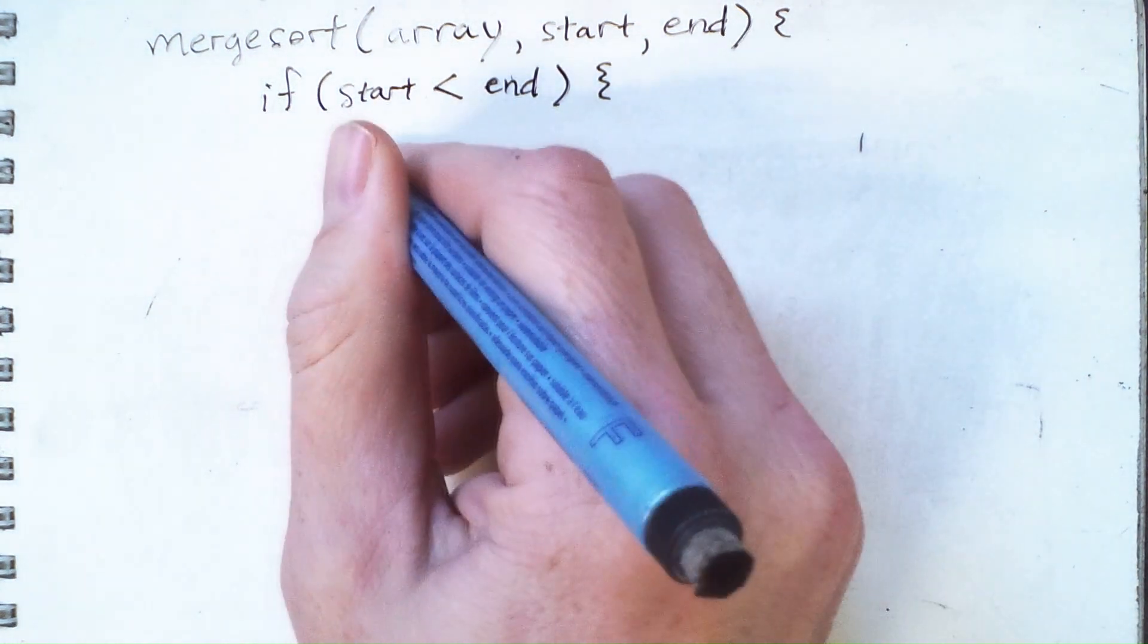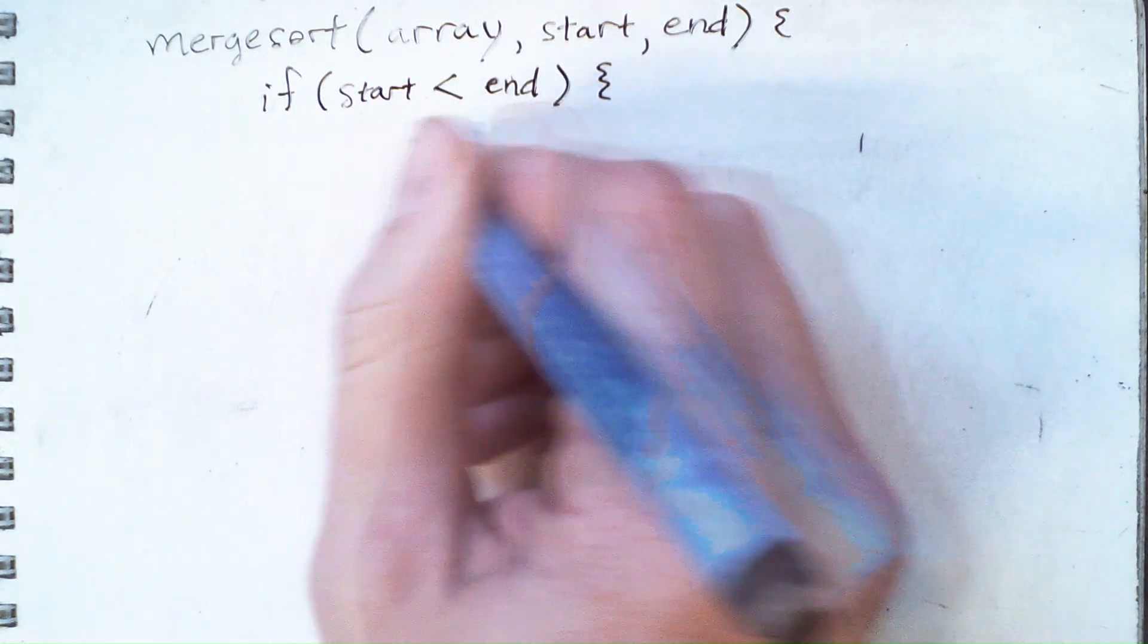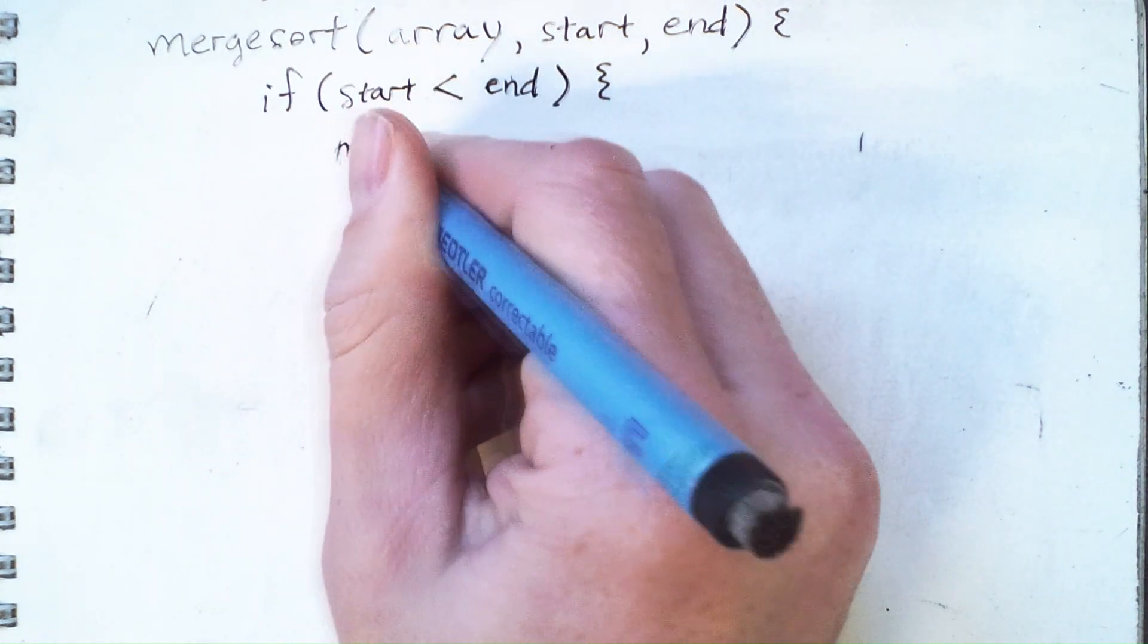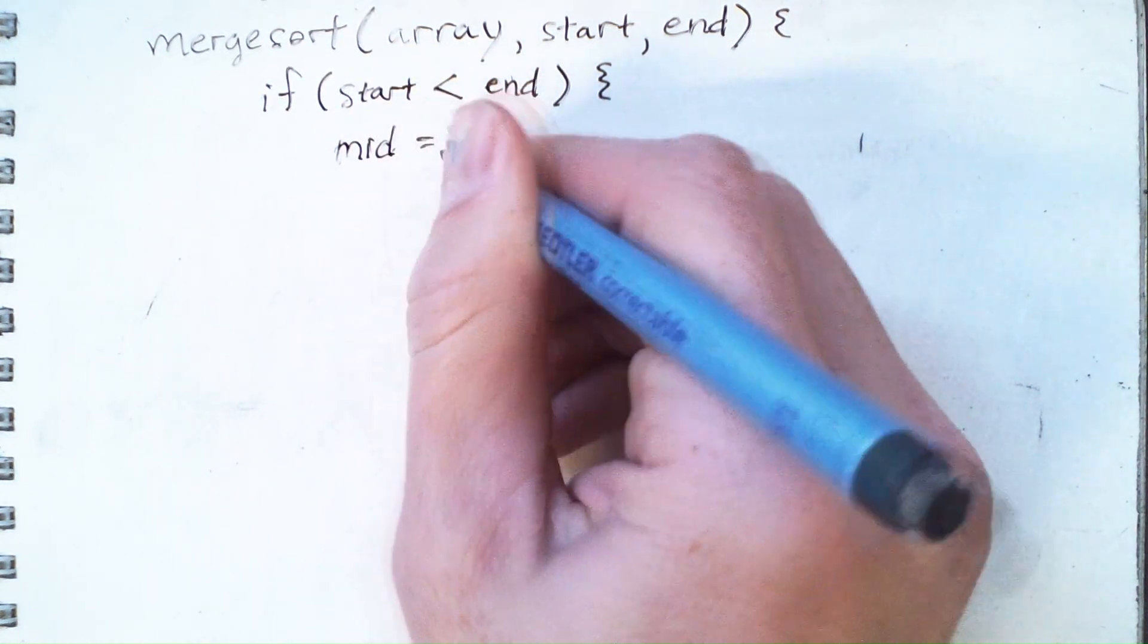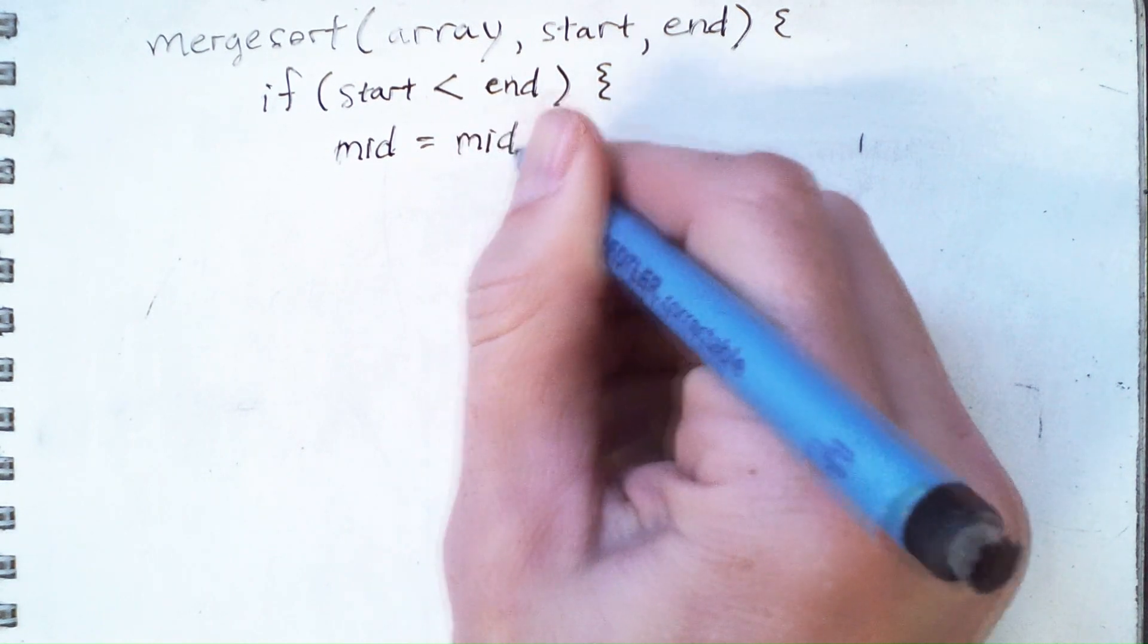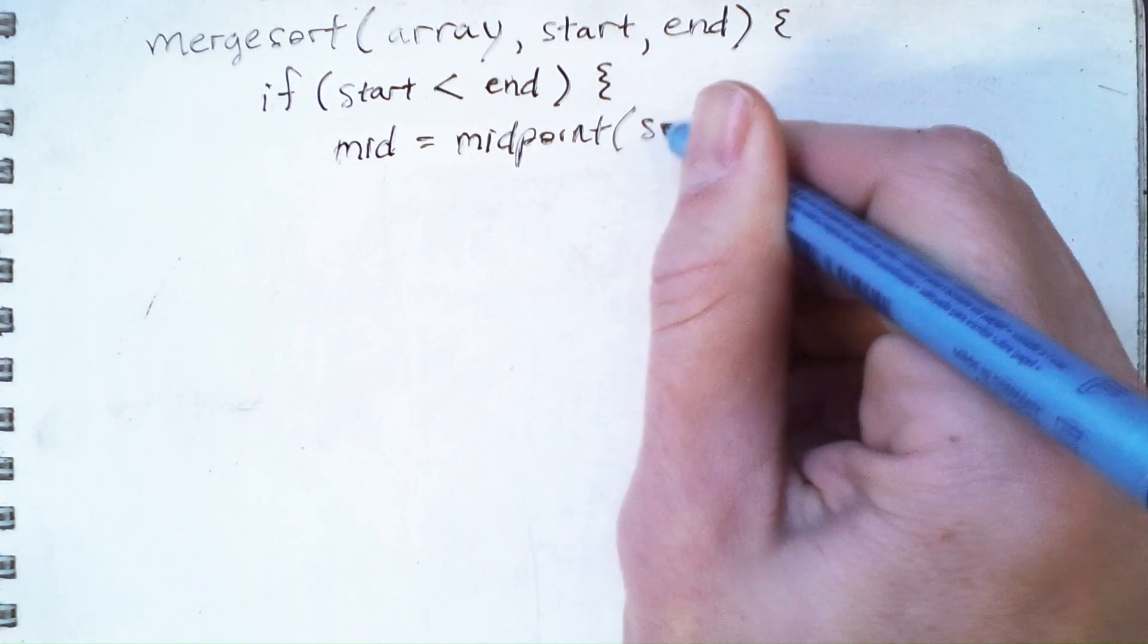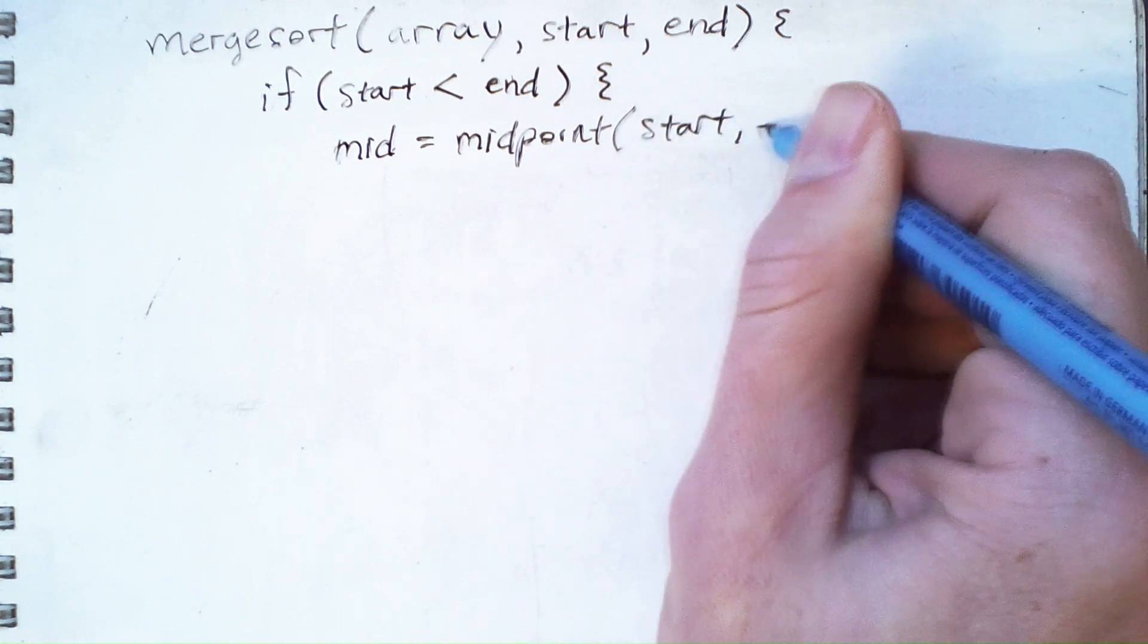But from here, we need to know how to split up the array. So we'll have a calculation that gives us the midpoint, and we'll assume we have some method or function that provides the midpoint between start and end.